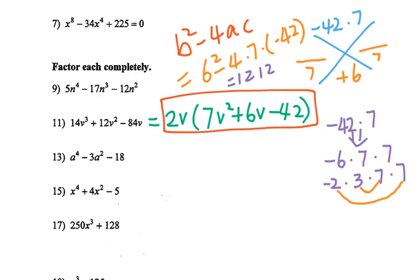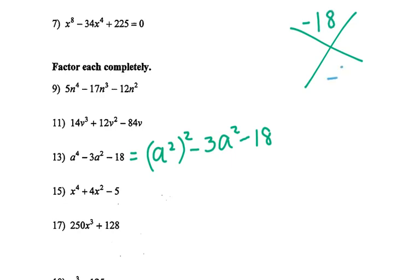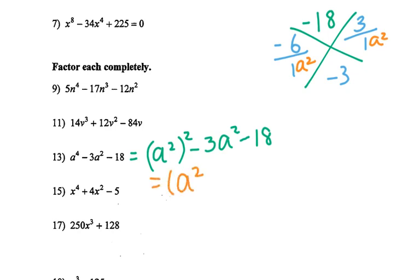Now let's go to number 13. For number 13, it's a twisted quadratic function. I have a squared, then squared, minus 3a squared minus 18. So we do ninja X: negative 18, negative 3 over 1, over 1. For negative 18 I can do negative 6 times 3. Then I have a squared and a squared.